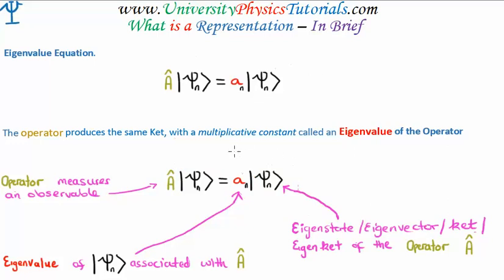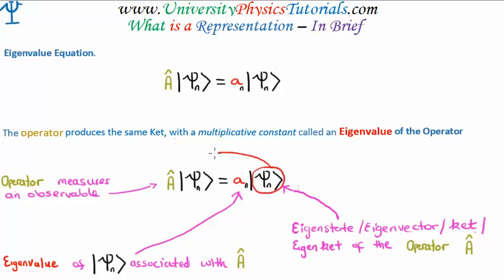Now, clearly we're talking about eigenvalue equations, and that's part of the reason that the language starts to broaden. Because we're talking about quantum state vectors, but they're in an eigenvalue equation. So, some people refer to them as eigenstates, or eigenvectors, perhaps simply kets, or even eigenkets — but they are all eigenstates of the operator A in this case. These are eigenstates of the operator A, and these are the eigenvalues of the operator A.